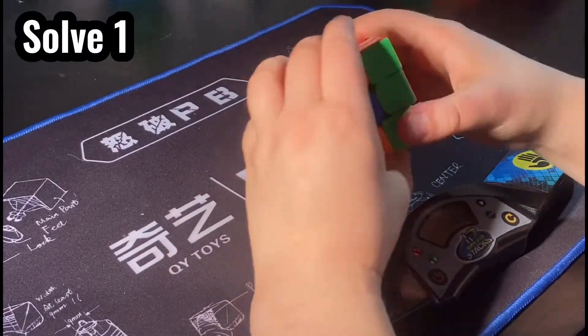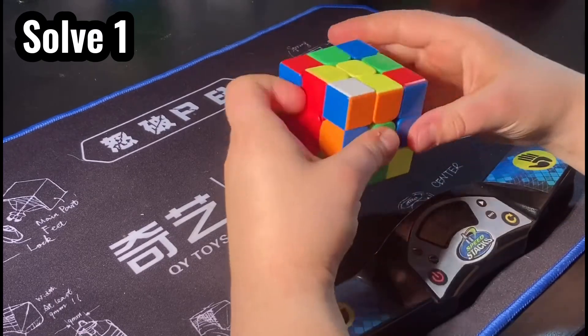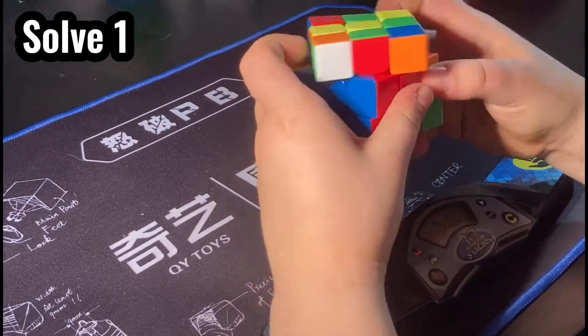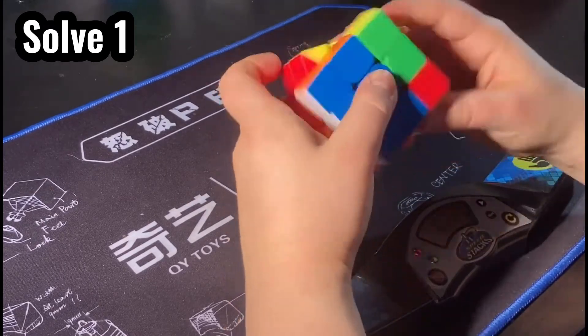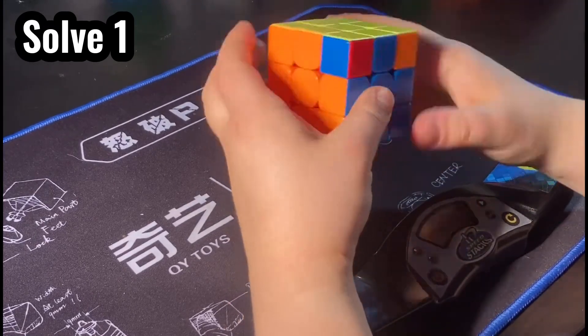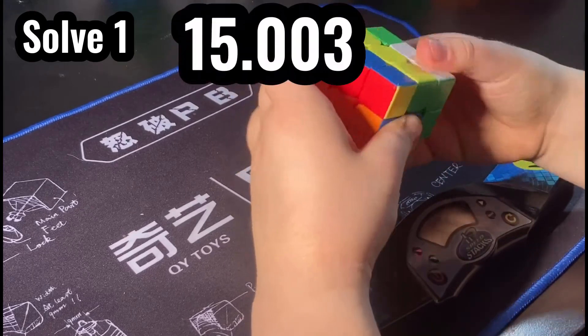So as we begin, I'm doing a pretty nice cross here already onto F2L, which is pretty fast for me. As you can see, the F2L pairs are pretty lucky, most of them, going pretty fast and nice OLL here. And we have an RA perm for a total of 15.003.